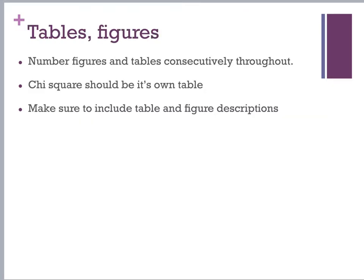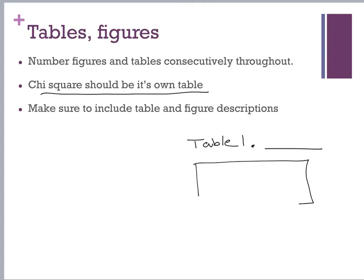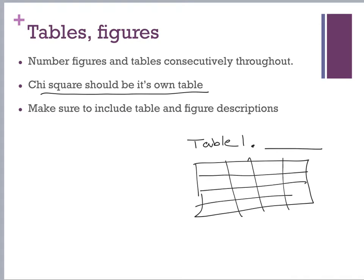Number your figures and tables consecutively throughout — table one, table two, figure one, figure two. Chi-square is going to be its own table. Make sure you include a table or figure description: for a table, write the description above the table; for a figure or picture, the description goes below.